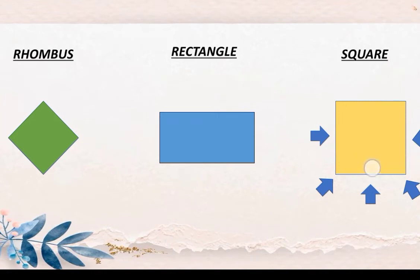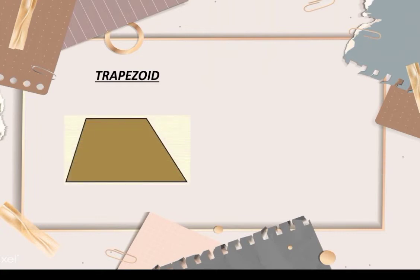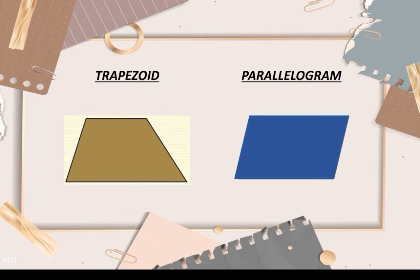In addition, to classify quadrilaterals by sides and angles, there are also specific names depending on whether or not opposite sides are parallel. We have first, trapezoid — trapezoid has one pair of parallel lines. Next is parallelogram — parallelogram has two pairs of parallel sides, a four-sided rectilinear figure with opposite sides parallel.